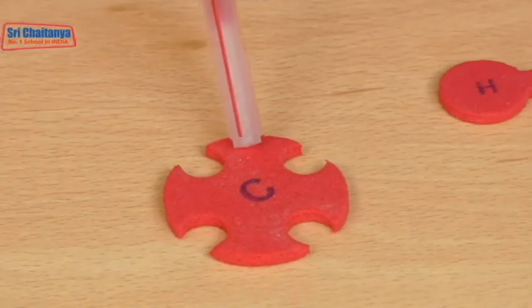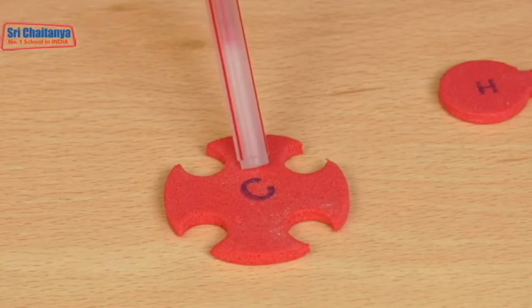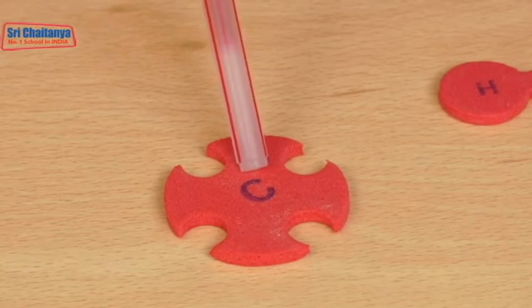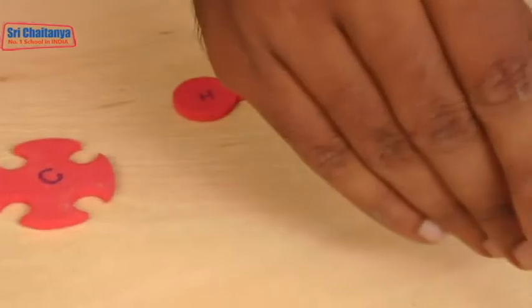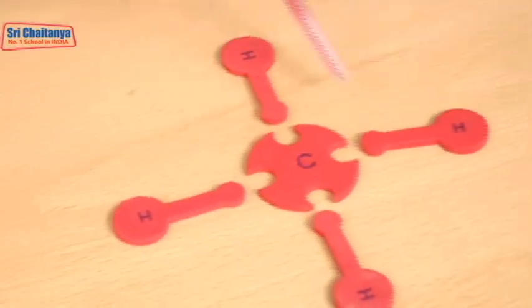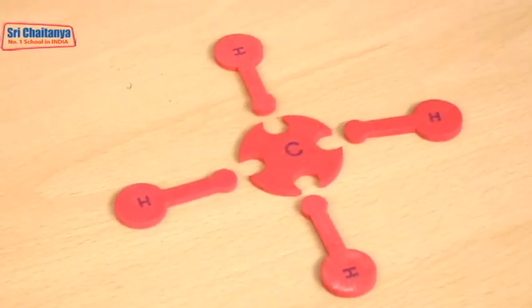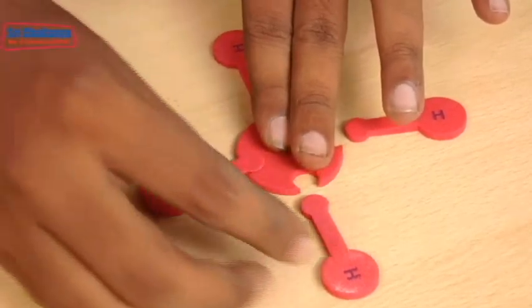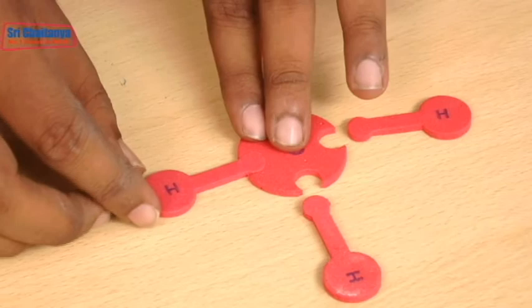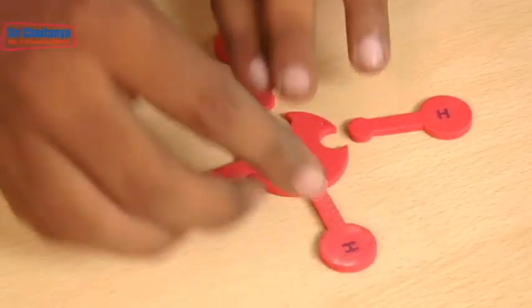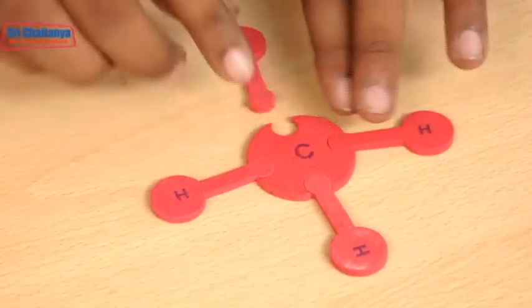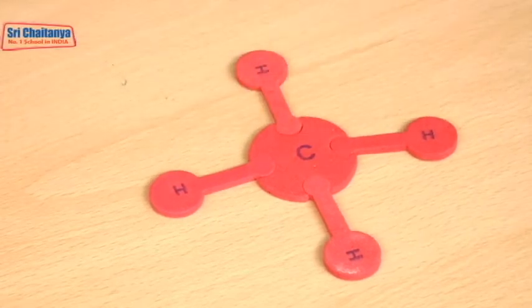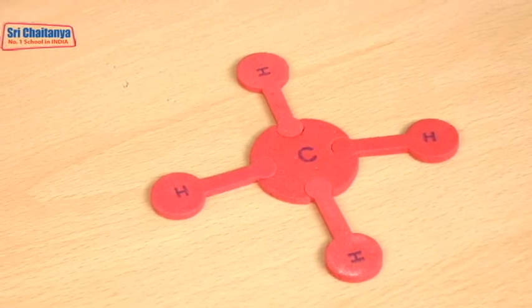Carbon has tetravalency. Carbon with hydrogen forms 4 bonds in its compounds. For example, CH4, in that one carbon is bonded with 4 hydrogen atoms. Between carbon and 4 hydrogens, 4 covalent single bonds are present.